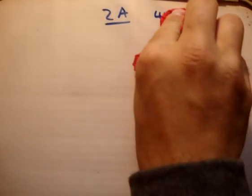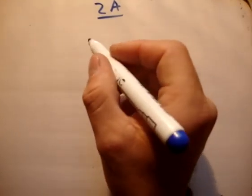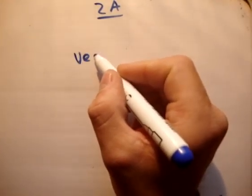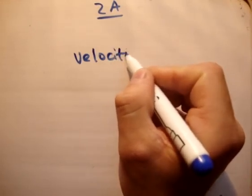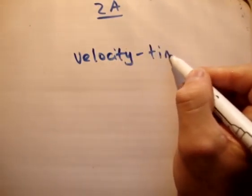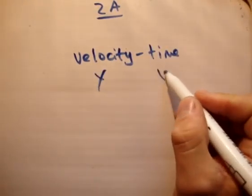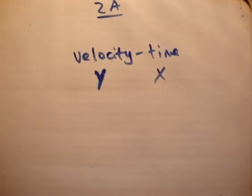The first question states that a car accelerated uniformly from rest to 10 meters per second in 5 seconds. Draw the time velocity graph and find... Now it says time velocity graph, but when you're talking about graphs you would always say what's on the y-axis first, so it's actually a velocity time graph. Y-axis first, then your x-axis.